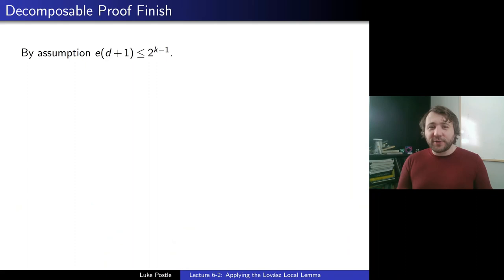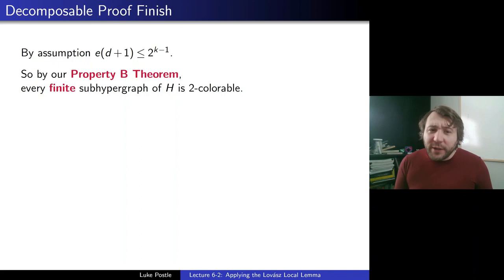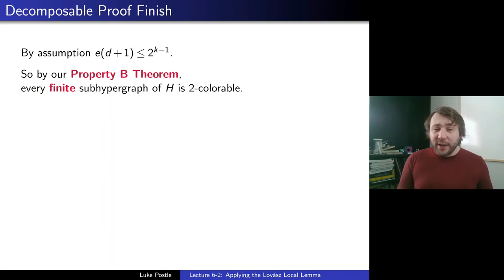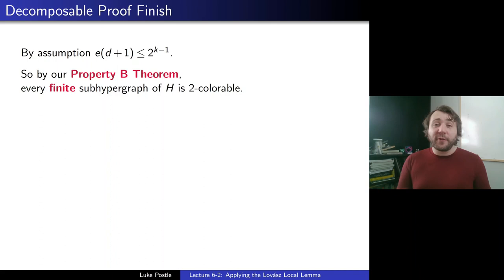By assumption, using exactly the inequality we stated, e·(d+1) ≤ 2^(k−1). Plugging in d = t³·2^18 gives exactly the inequality from our theorem. That means we can use our property B theorem: if we have a hypergraph where edges have at least k vertices and intersect at most d other edges, they satisfy property B. That only works for finite hypergraphs, so we note that every finite sub-hypergraph of H is two-colorable. Passing to a sub-hypergraph doesn't increase the number of intersections, so the condition still holds.